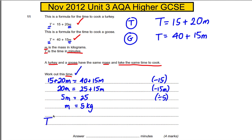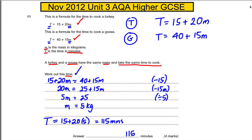We substitute the mass back in. The time is 15 + 20 × 5, which gives 115 minutes. You could substitute into either formula and get the same result. So the answer is 115 minutes — a nice and easy question.